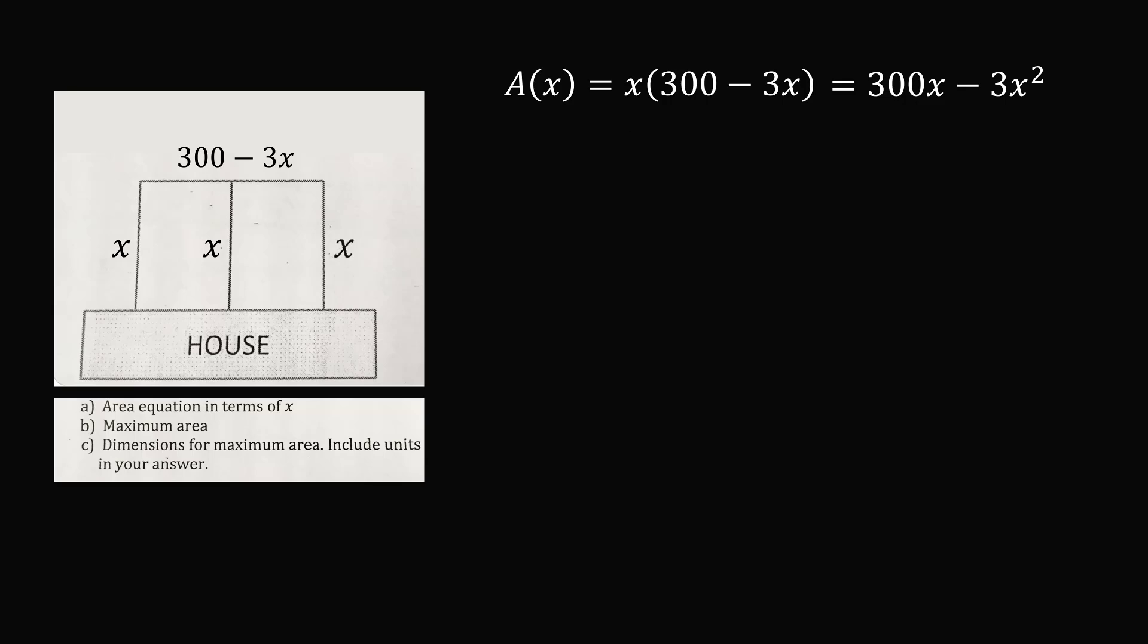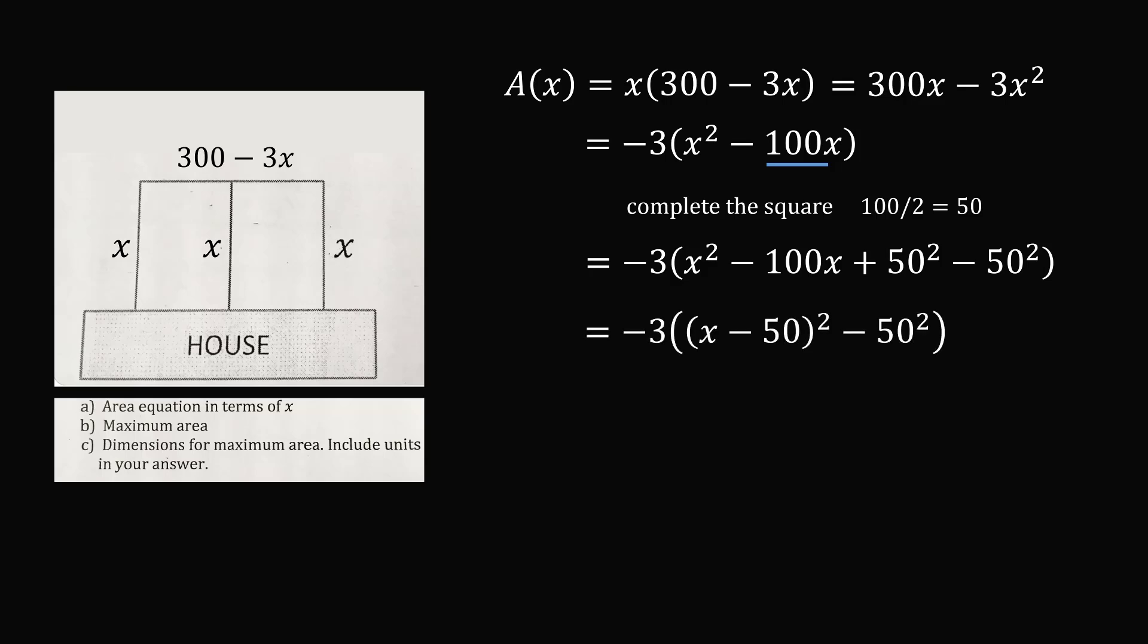Another approach is to consider the problem algebraically. Let's first factor a negative 3. We will now complete the square of the bracketed term. We have x squared minus 100x, so we will take half of this middle term and we will square it. So we will add 50 squared and subtract 50 squared. x squared minus 100x plus 50 squared can be factored into the square of (x minus 50). We will now distribute. We have minus 3 times the square term, and we have minus 3 times a minus 50 squared. That will become a positive 3 times a positive 50 squared.